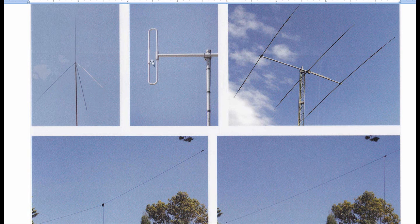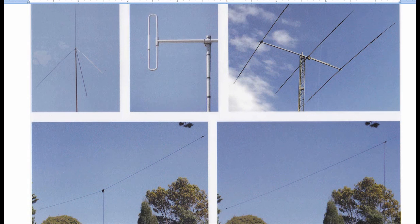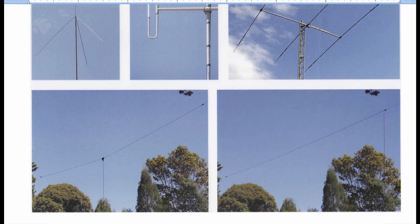The one in the middle top is a folded dipole. Top right is a Yagi antenna, or a 3-element Yagi antenna — I wouldn't go any further than that. The bottom left is a centre-fed antenna. That's a balun and this is the cable coming up, so that's a centre-fed antenna.